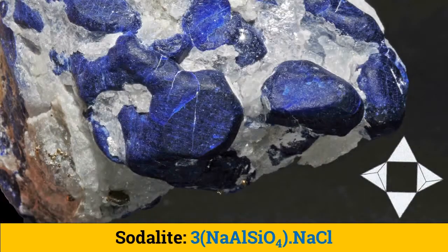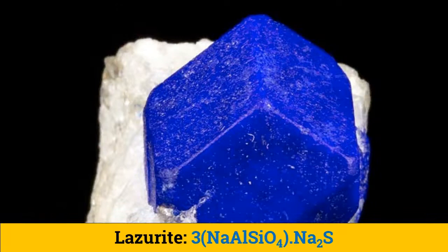Lazurite is easy to identify due to its blue color. Its structure is similar to that of leucite, but the channels formed here intersect with each other to form larger cavities where the chloride, sulfate, or sulfide ions may reside. Its typical distinguishing rich blue color makes this mineral one of the most distinctive and attractive minerals of all time. The world's best lazurite comes from northeastern Afghanistan, and its color comes from sulfur.